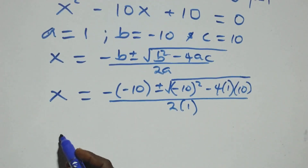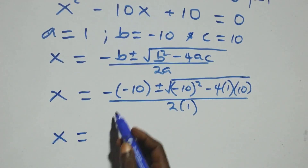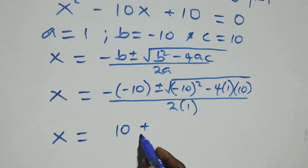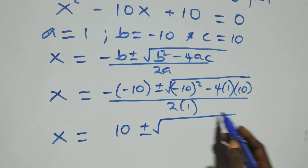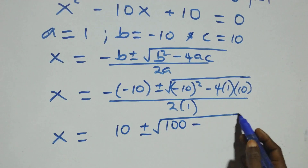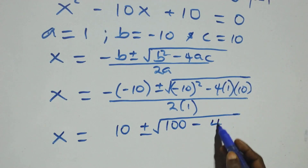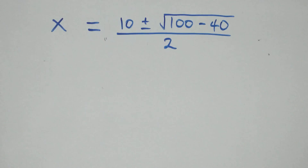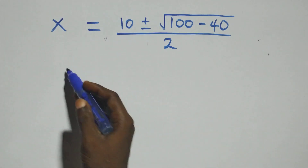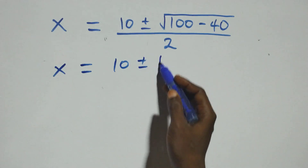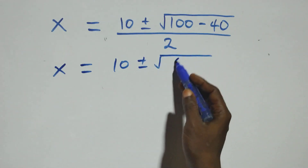Simplifying: minus (minus 10) gives plus 10, and (minus 10) squared equals 100, then minus 4 times 1 times 10 gives minus 40. So we have x equals 10 plus or minus square root of 100 minus 40, which is the square root of 60, over 2.